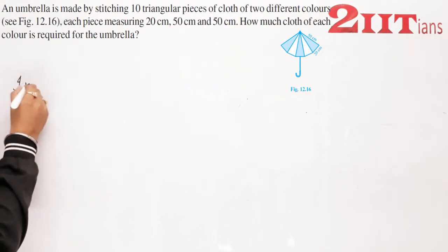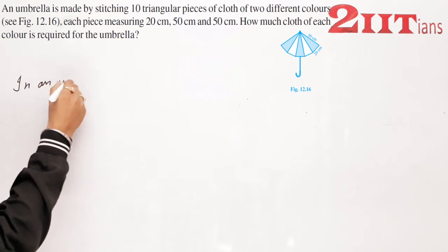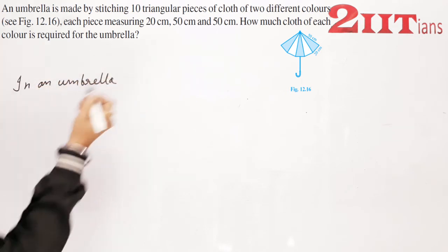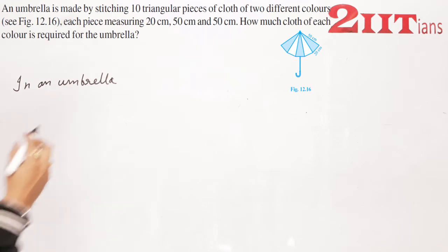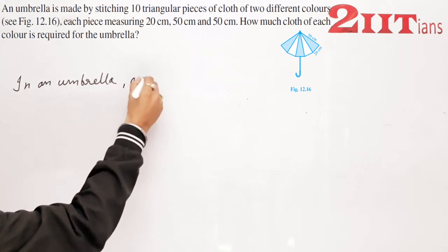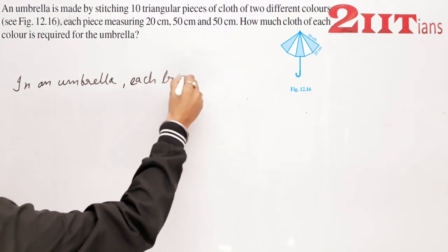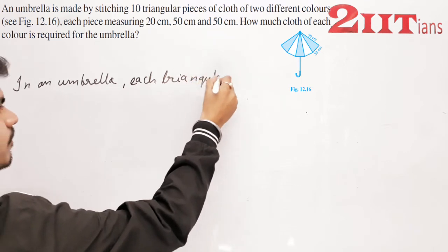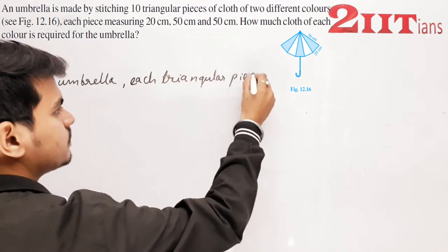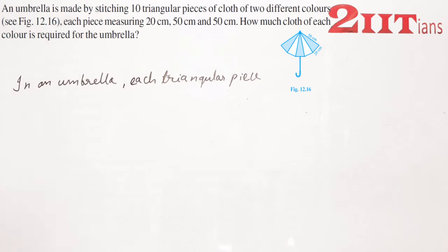In an umbrella, each triangular piece is an isosceles triangle.